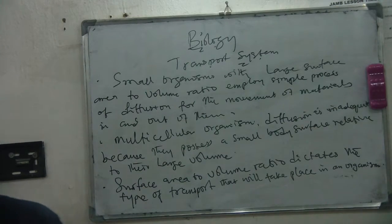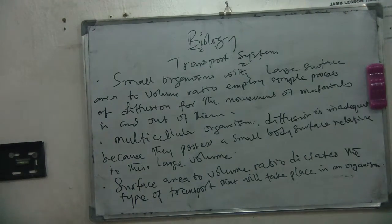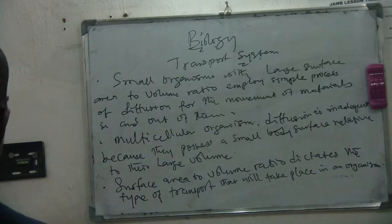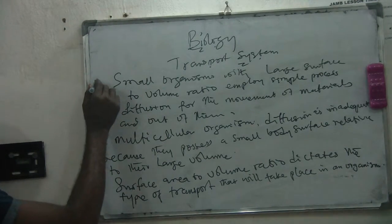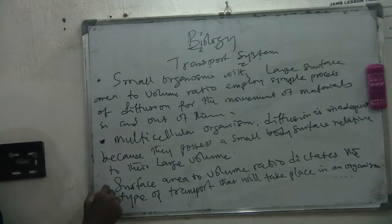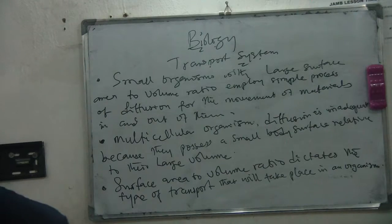Those are important facts you should know. That is why we have a transport system. These reasons are why we have a transport system. Number one: we need to move materials from one point where they are produced to the point where they are needed or removed.